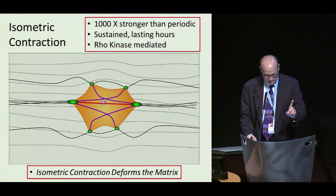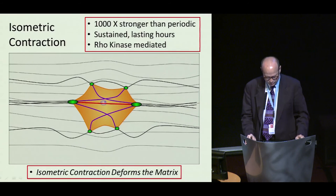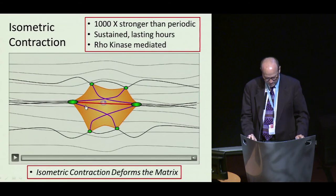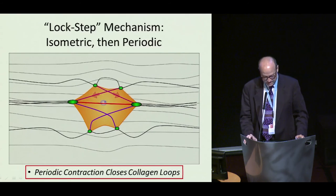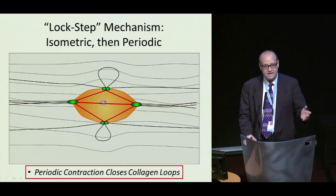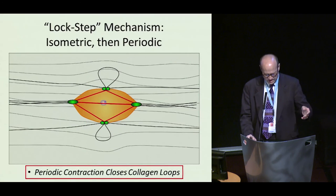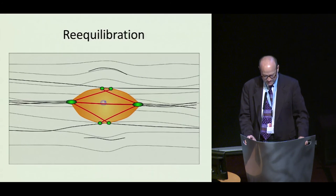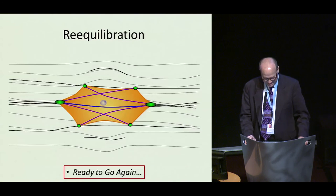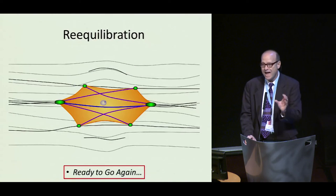This is the first step in wound contraction. When these stress fibers contract isometrically, it creates slack around the cells, and then periodic contractions kick in — always firing every hundred seconds — creating loops. Extracellular cross-linking enzymes come in, trim the slack, join the ends together, and it's ready to go again. That's how active contracture ratchets an open wound closed.